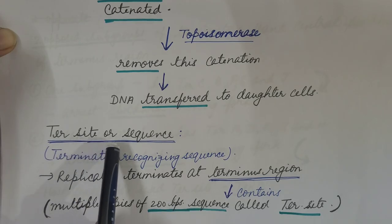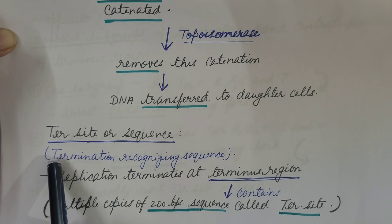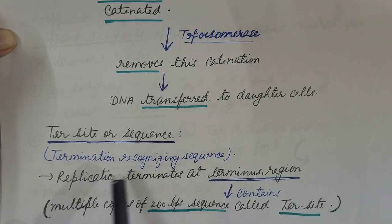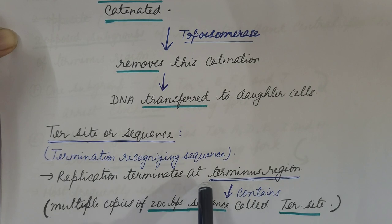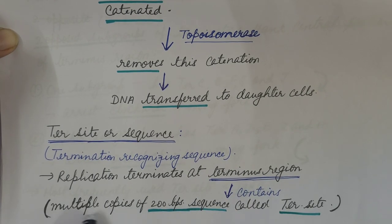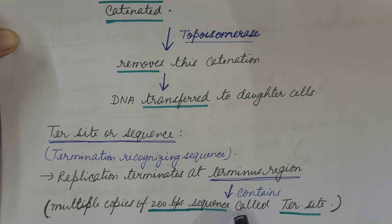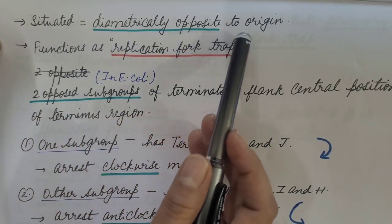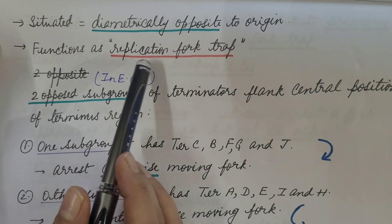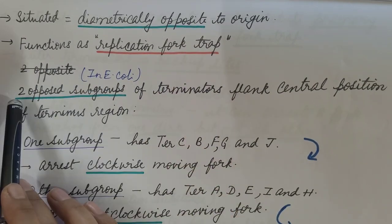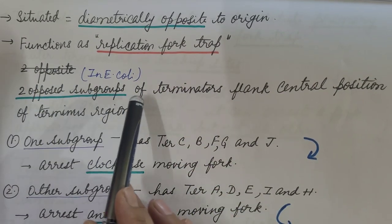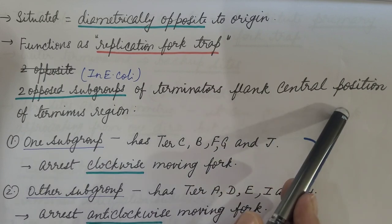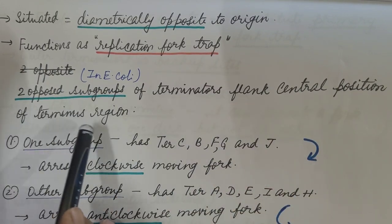Now let us see the ter site or sequence. Ter site is a termination recognizing sequence. Replication terminates at the terminus region, and this terminus region contains multiple copies of a 23-base-pair sequence called ter site. This terminus region is situated diametrically opposite to the origin and functions as a replication fork trap. In E. coli, two opposed subgroups of terminators flank the central position of the terminus region.